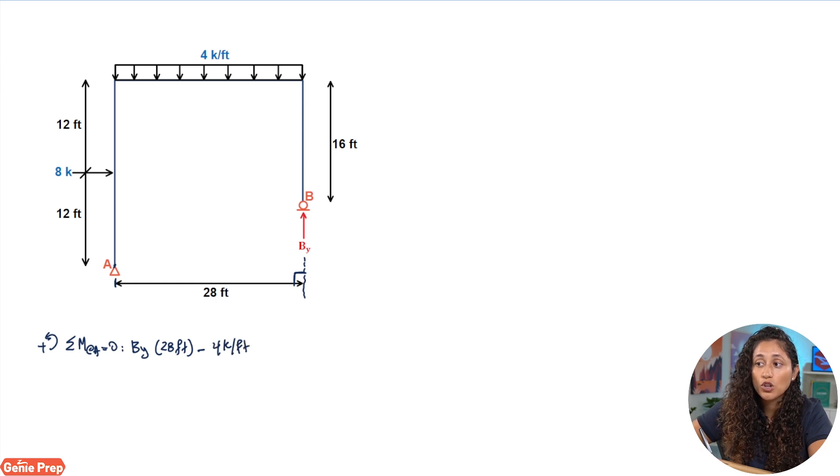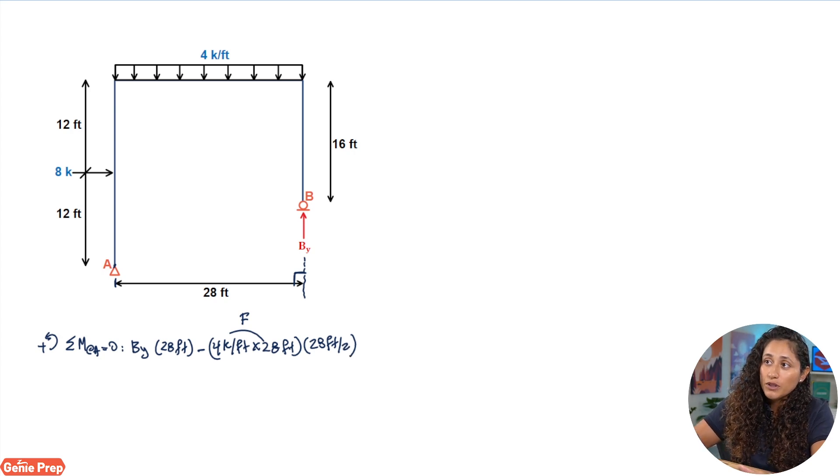Now remember this is the distributed load but we need to get the force, right, because moment is force times the moment arm, so first we need to find the force and then multiply by the moment arm. Now the force is usually the distributed load times the span of the distributed load which in this case is 28 feet, so we're gonna take 4 multiplied by 28 feet. Now remember this here gives us the force, and the moment arm is going to be 28 feet divided by 2, and the reason that is it's because what we do is we assume that this force of the distributed load is applied at the centroid of the distributed load, which means it's going to just be half of 28. And then we're gonna have minus 8 kips.